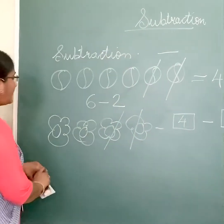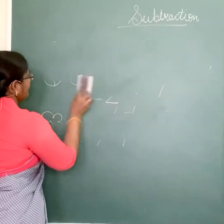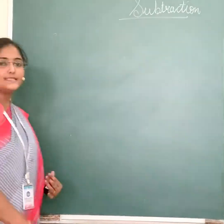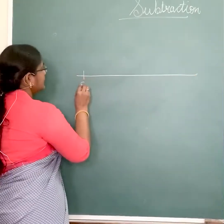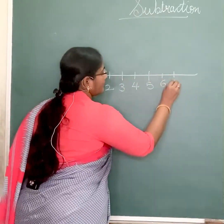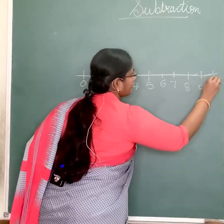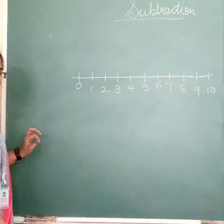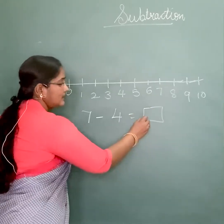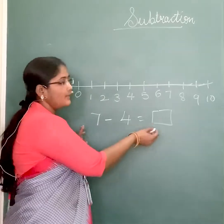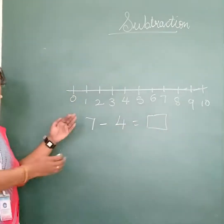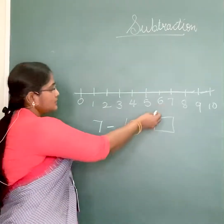Let's see. We are going to subtract numbers on the number line. This is called the number line. The sum is 7 minus 4. We have to find out the answer on the number line. So we start from number 7. In addition you have to go forward, but in subtraction you have to take steps back — you have to move backwards. So start from 7.